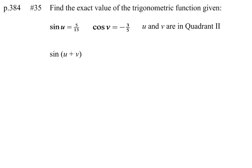Page 384, number 35. Find the exact value of the trigonometric function given: the sine of u is 5 over 13, the cosine of v is negative 3 over 5, and u and v are in quadrant 2.